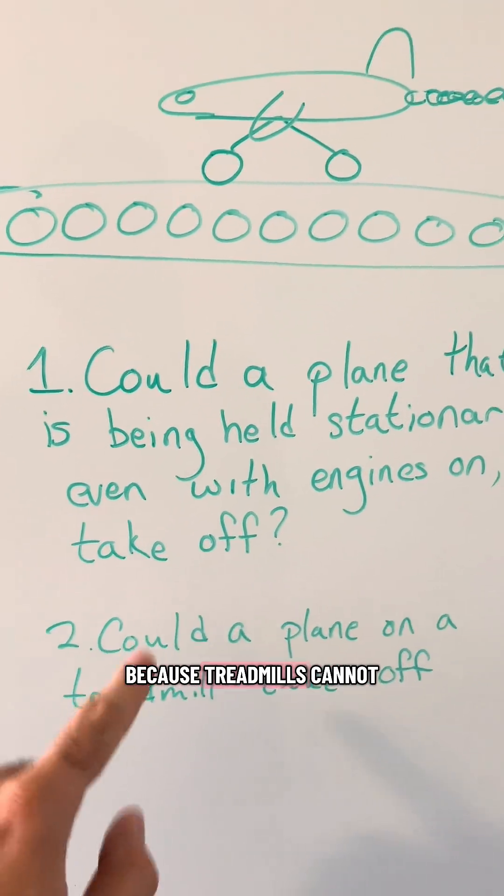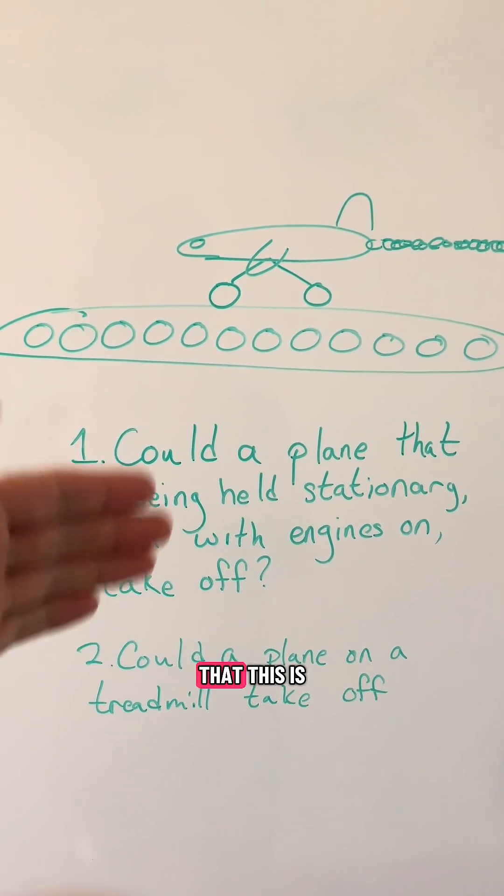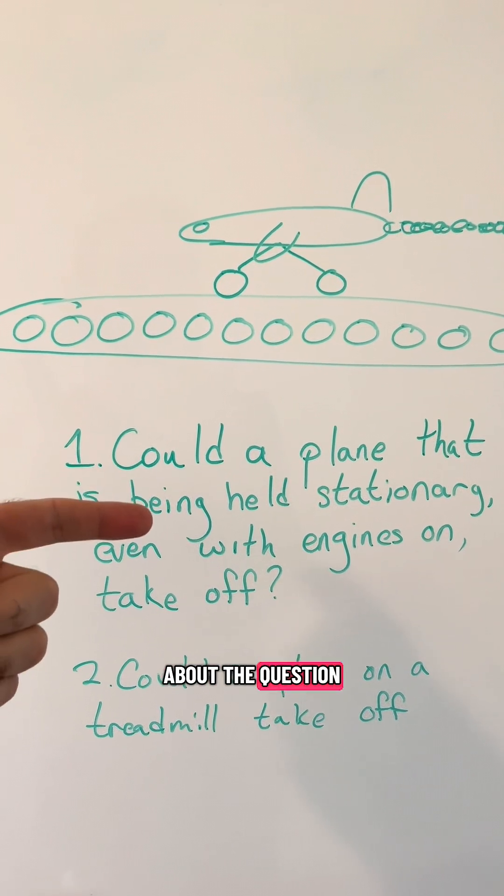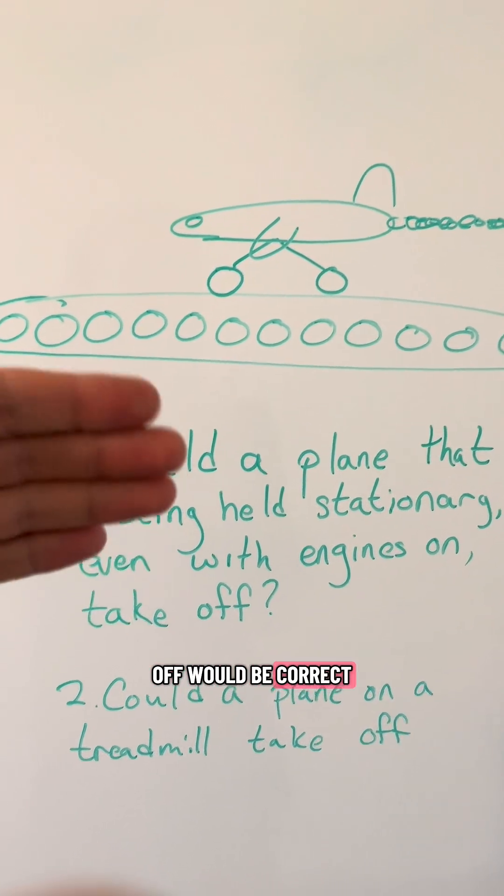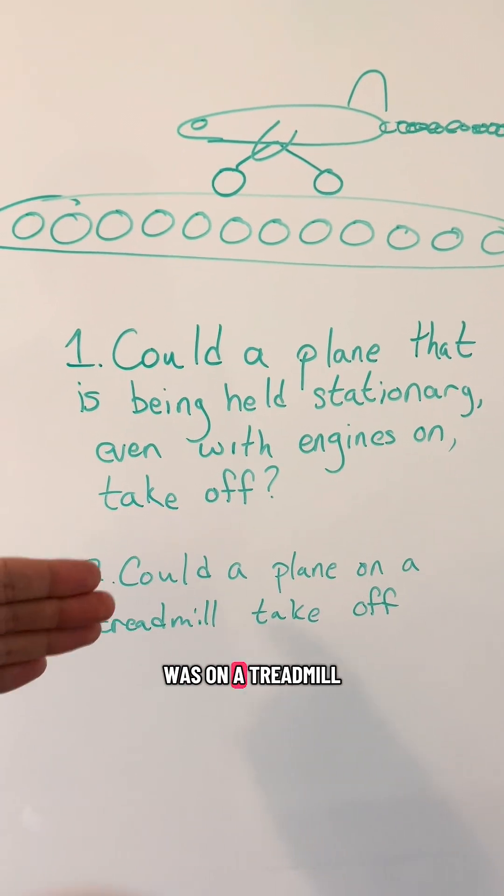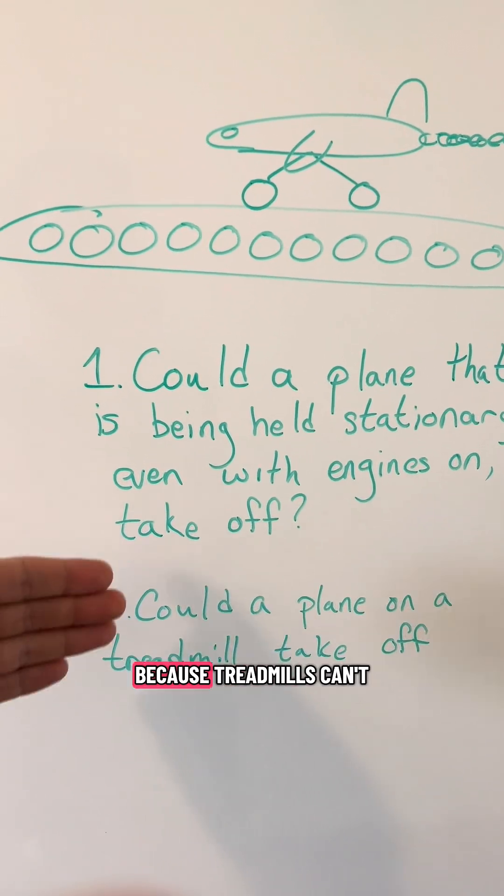So it seems this is why people are fighting so much. The people who are thinking about the question in terms of 'if a plane was being held stationary, could it take off?' would be correct—it won't be able to take off. But people who are saying 'if a plane was on a treadmill could it take off?'—yes, a plane can take off on a treadmill because treadmills can't hold planes stationary.